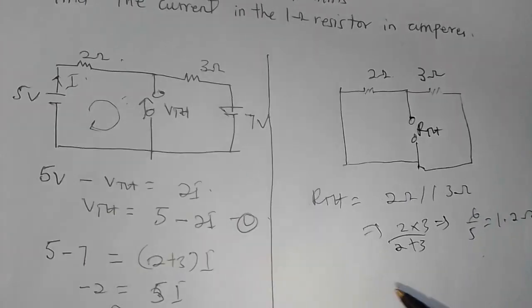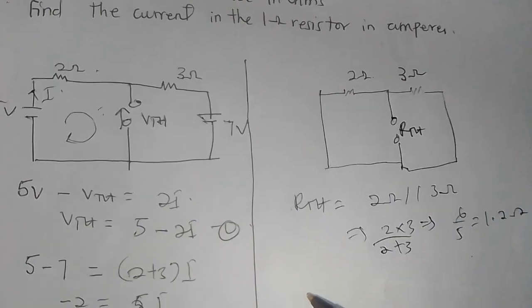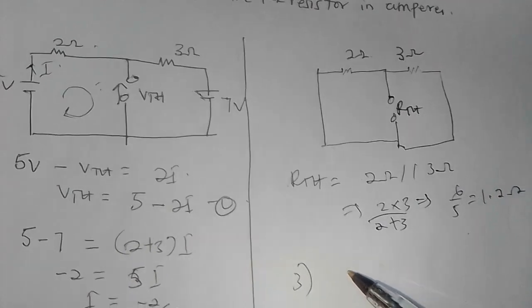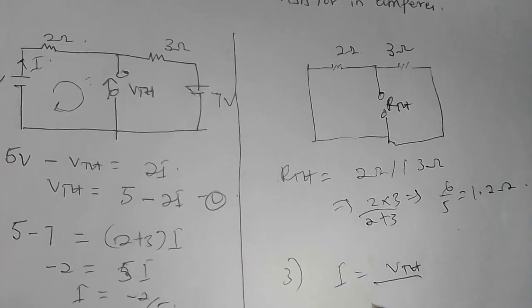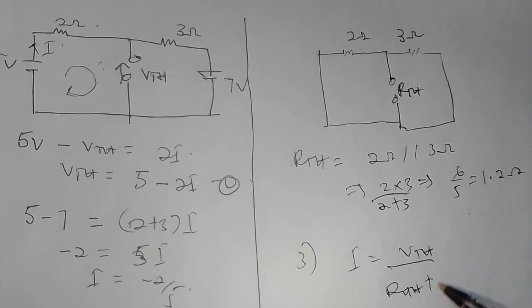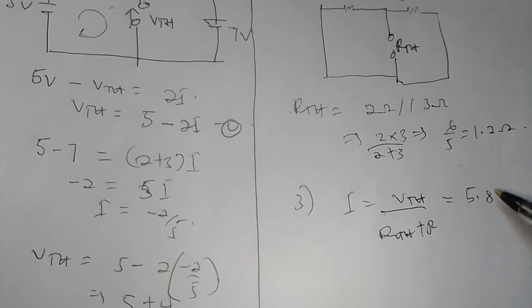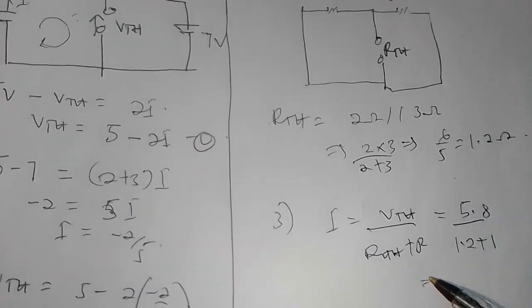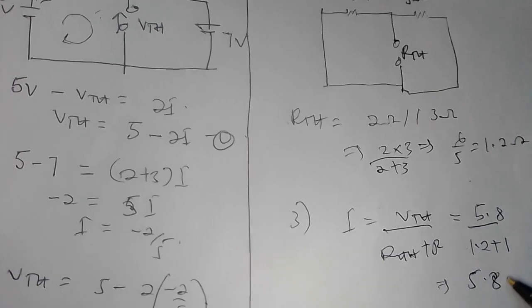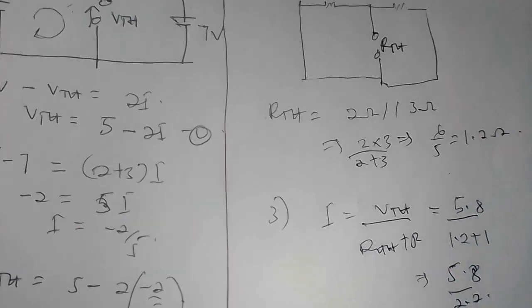Now let's go straight to the final question, finding my current I. You know that I is equal to VTH over RTH plus R. My VTH was 5.8 over my RTH, which is 1.2, plus my R, which is 1. So I'm going to get 5.8 over 2.2, and that is going to give me 2.64 amperes.